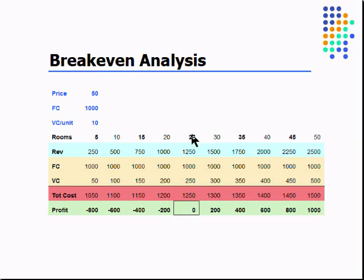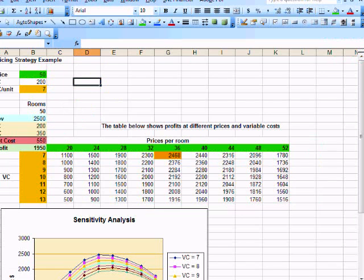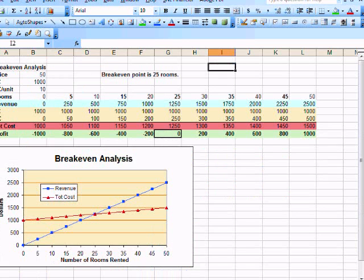So if we're renting anything more than 25 rooms, we're making a profit. Let's take a look at that in Excel really quick, and we'll also look at the mathematical way to solve this problem.